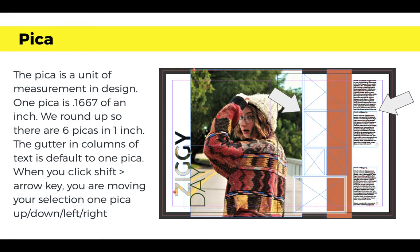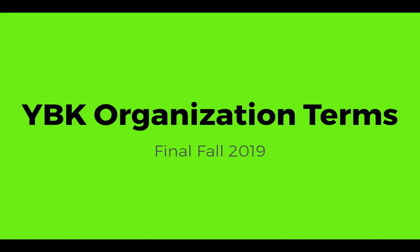Pica is a unit of measurement — 0.1667 of an inch, rounded up so there are six picas in one inch. The guttering between columns of text defaults to one pica. When designing captions, you need to keep a pica of space. A helpful InDesign tip: if you hit Shift and any arrow key (up, down, left, right), whatever graphic element you're working with will move exactly one pica, making spacing adjustments easy.